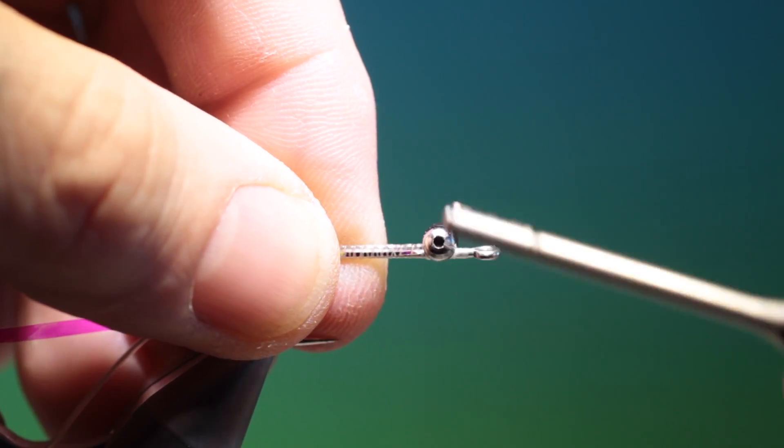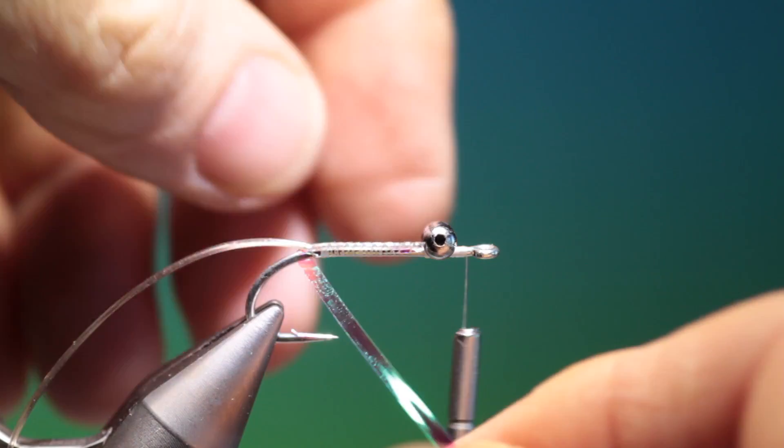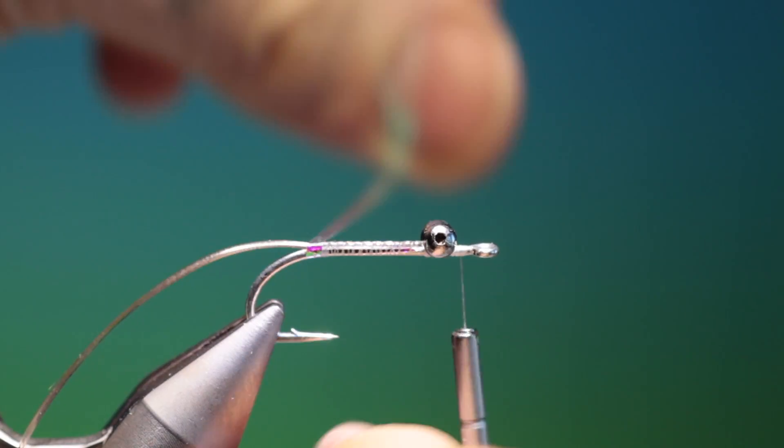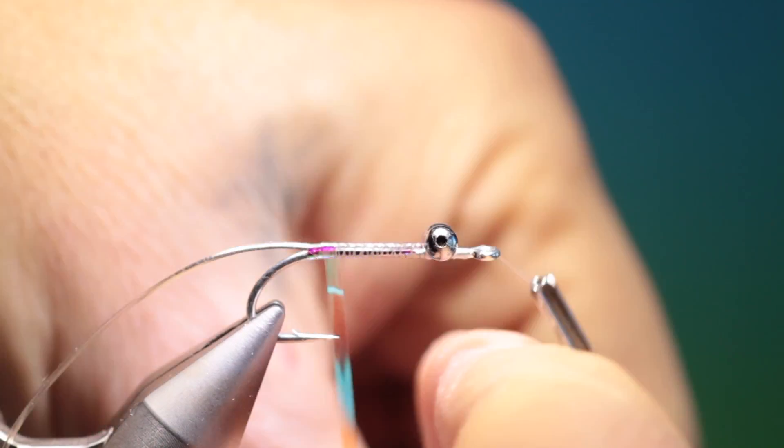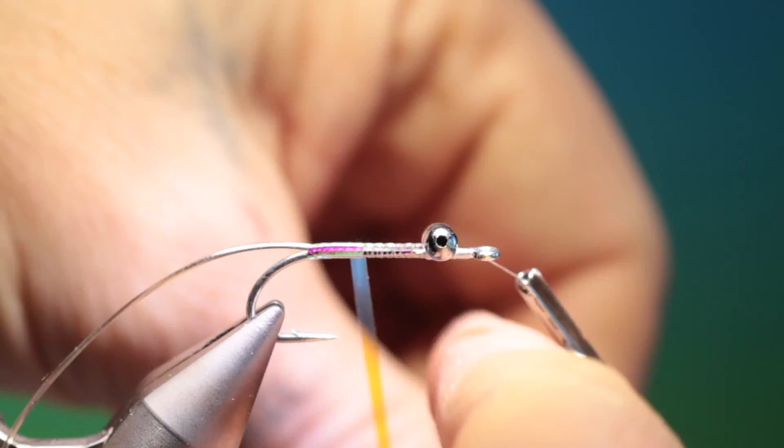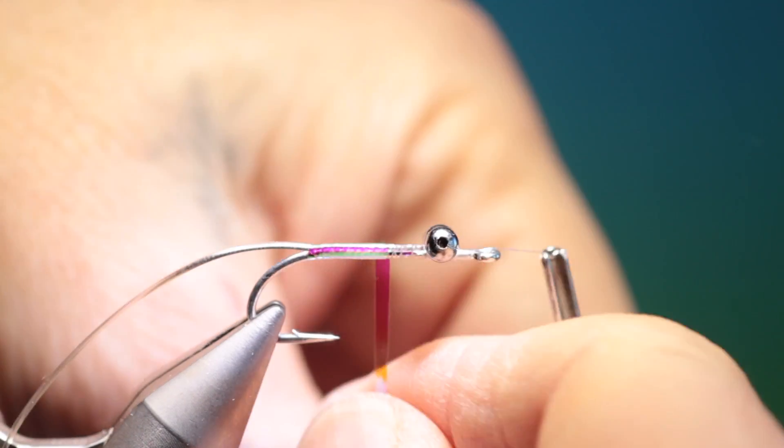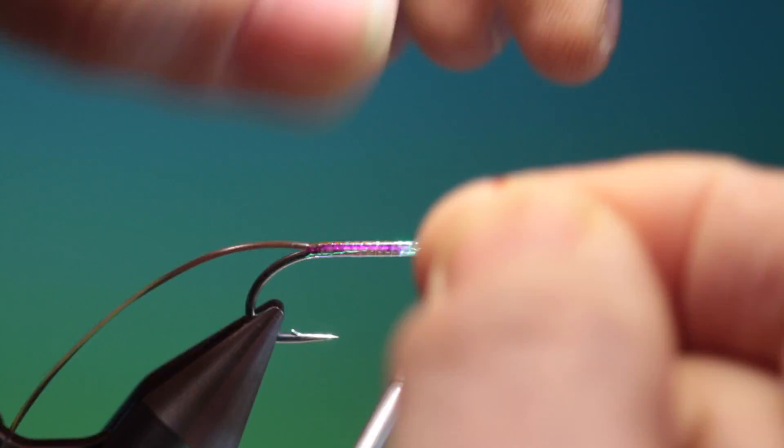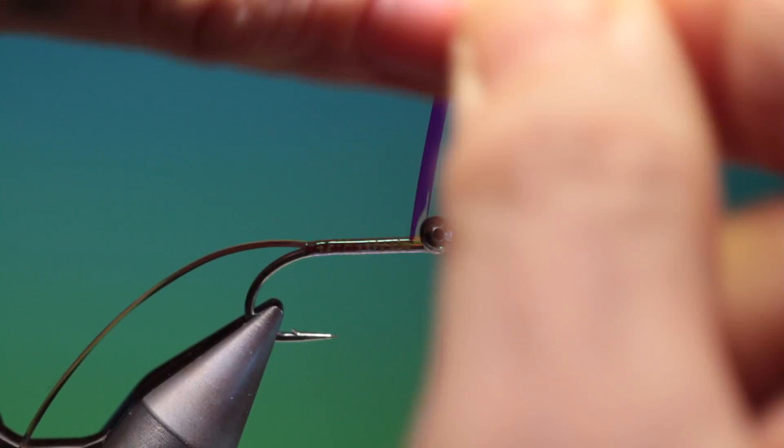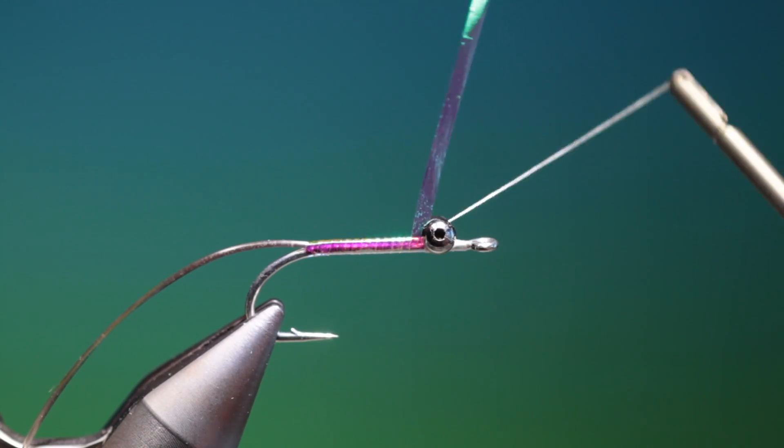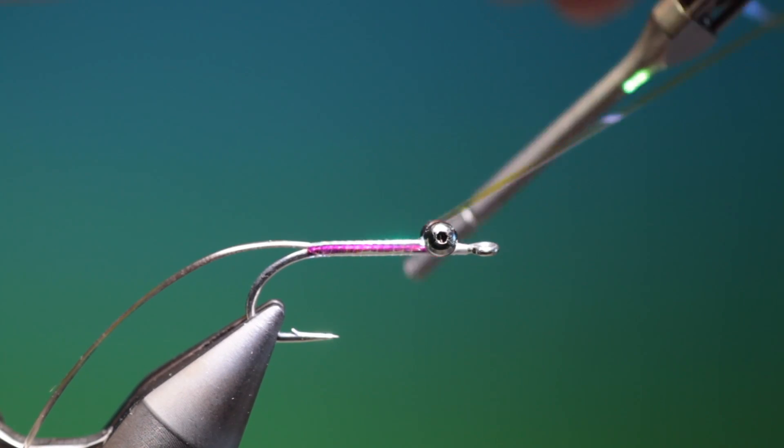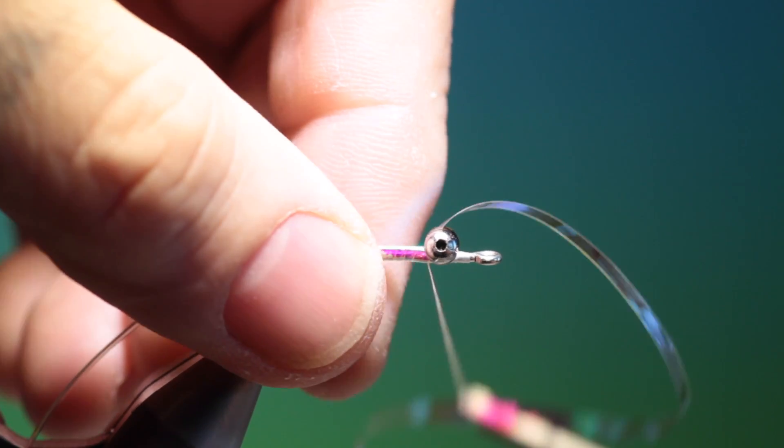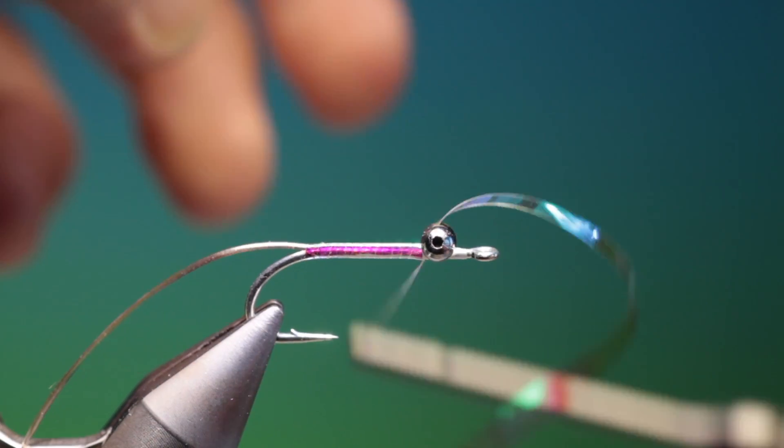Just go in front, take our tinsel. This just gives a nice shine through the magic glass rib. And go up here and we'll just come back and tie that off there.